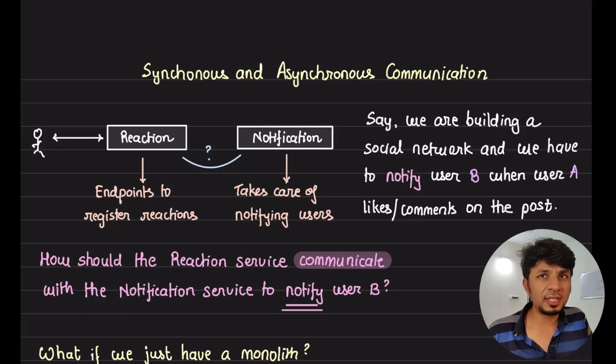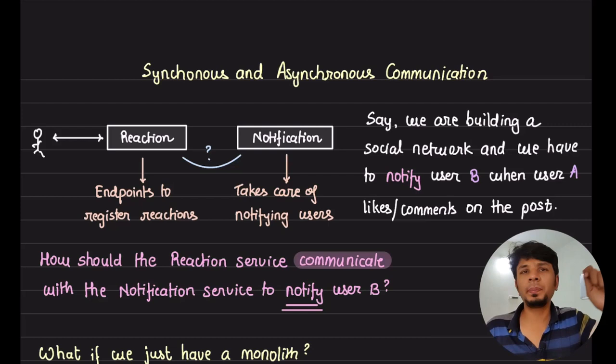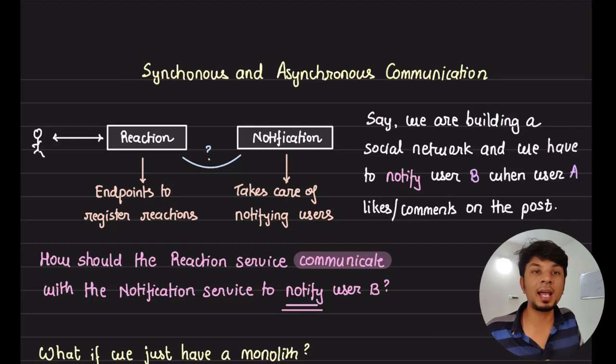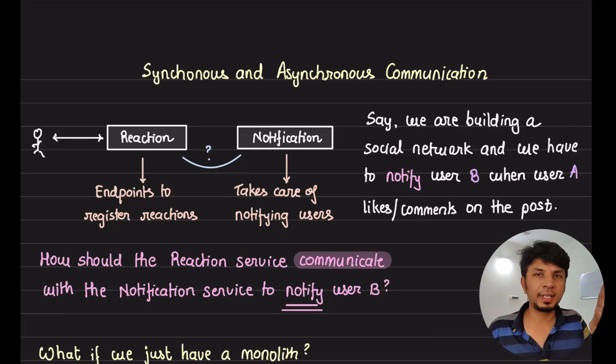Microservices need to talk to each other to exchange information and get things done. For example, your core API server needs to talk to your notification service to send notifications to followers when you post something. Picking the right communication pattern is super important — a good decision will ensure a great user experience and scalability, while a bad one will ruin your party. There are overall two categories: synchronous and asynchronous.